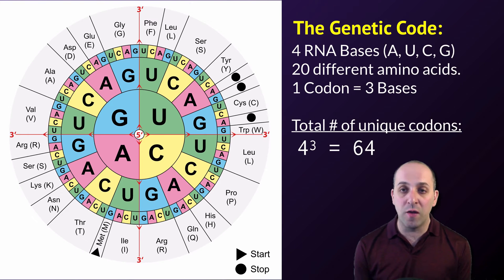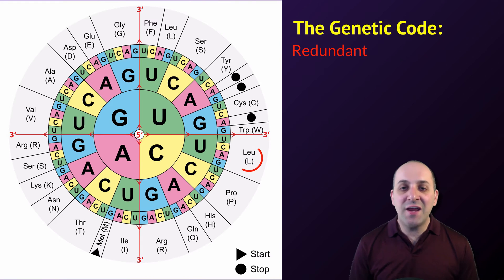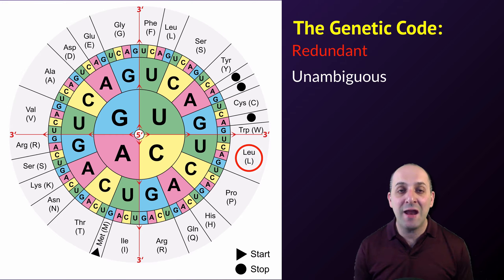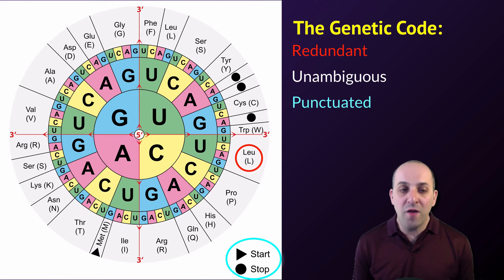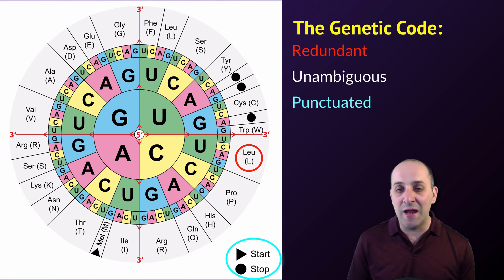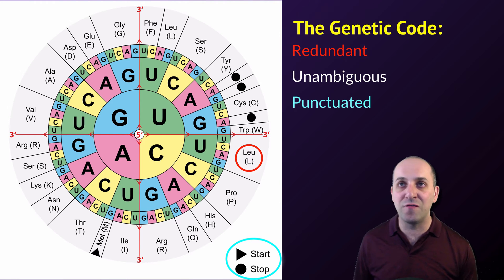There are some other features of the genetic code that we should be aware of as well. The genetic code is redundant — there are many instances where more than one codon codes for the same amino acid — but it's also unambiguous, meaning that each codon only codes for one specific thing. Finally, it's also punctuated. There's one start codon, which is AUG, that codes for the amino acid methionine, and there are three separate stop codons: UAA, UAG, and UGA. This tells the ribosome where to start and stop translation when a transcript is fed into it.